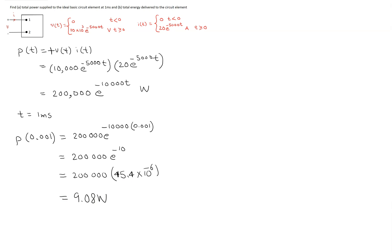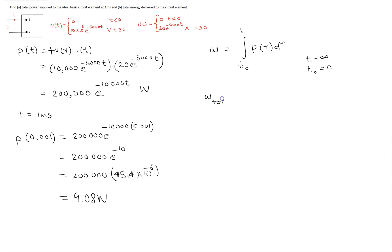We have completed the first task of finding the total power supplied to the ideal basic circuit element. Next, we need to find the total energy delivered to the circuit element. The basic relationship between energy and power is that energy is the integral of instantaneous power from some initial time to a general time t. To find the total energy delivered, we substitute the final time as infinity, starting at t0 equal to 0.